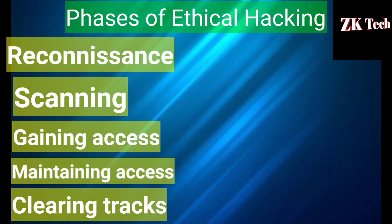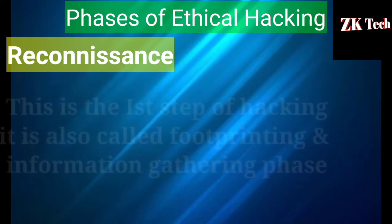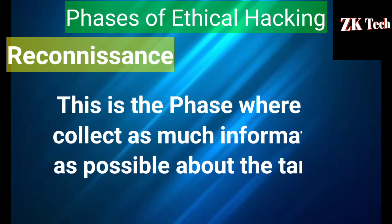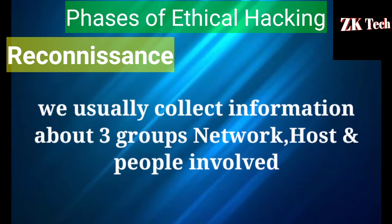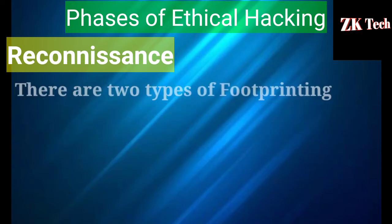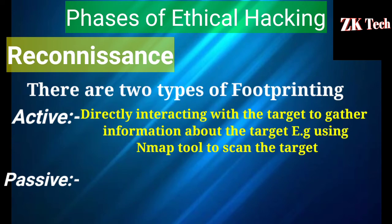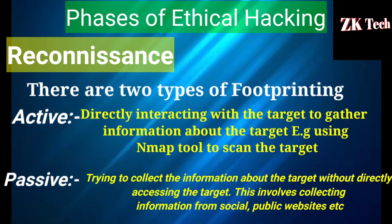Reconnaissance is the first phase of ethical hacking, also called footprinting and information gathering. This is the phase where we collect as much information as possible about the target — usually about three groups: network, host, and people involved. There are two types: active footprinting, which involves directly interacting with the target to gather information (for example, using an Nmap tool to scan the target), and passive footprinting, which means collecting information about the target without directly accessing it, such as gathering data from social media or public websites.